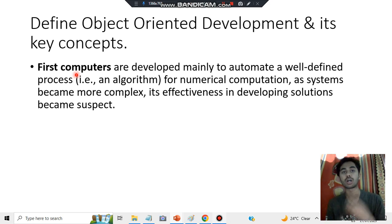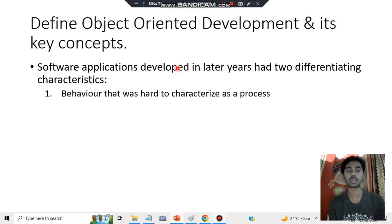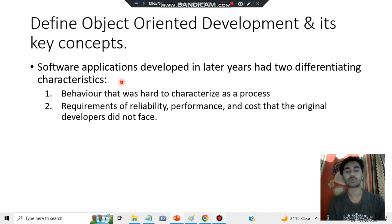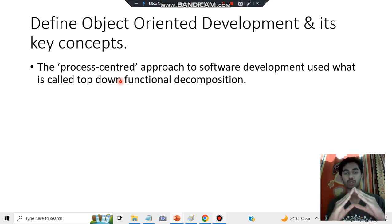The first computers were not able to handle complex problems, so there was a need to make some changes and develop something that could solve them. Software applications developed in the later years had two differentiating characteristics: one is behavior, and the second is the requirements of reliability, performance, and cost.